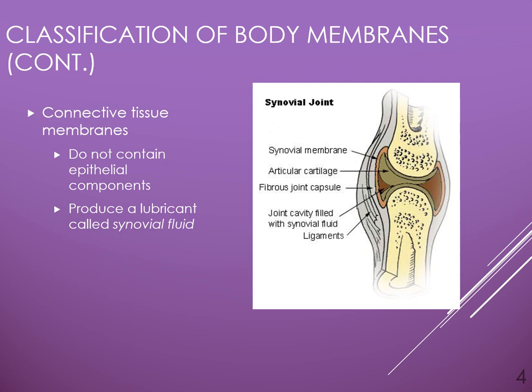Connective tissue membranes are different from cutaneous, serous, and mucous membranes because they do not contain epithelial components. A good example of a connective tissue membrane is a synovial membrane.